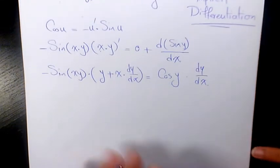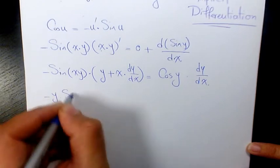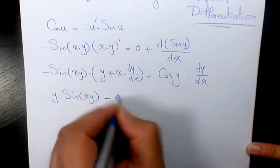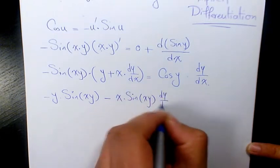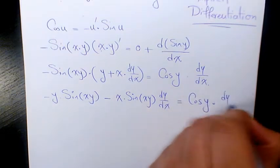Now we need to start simplifying. It's going to be negative y times sine xy minus x times sine xy times dy over dx equals cosine y times dy over dx.